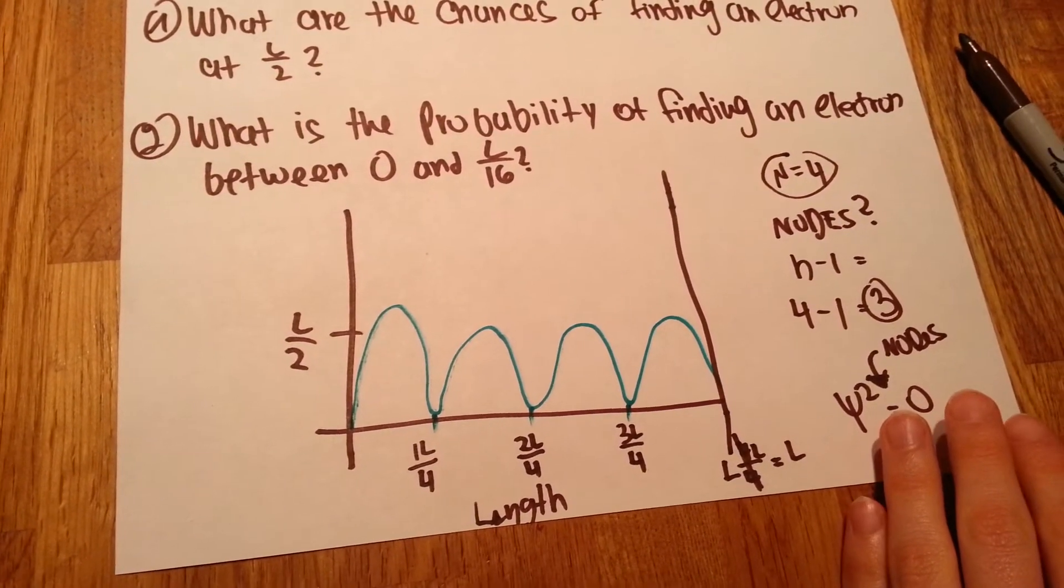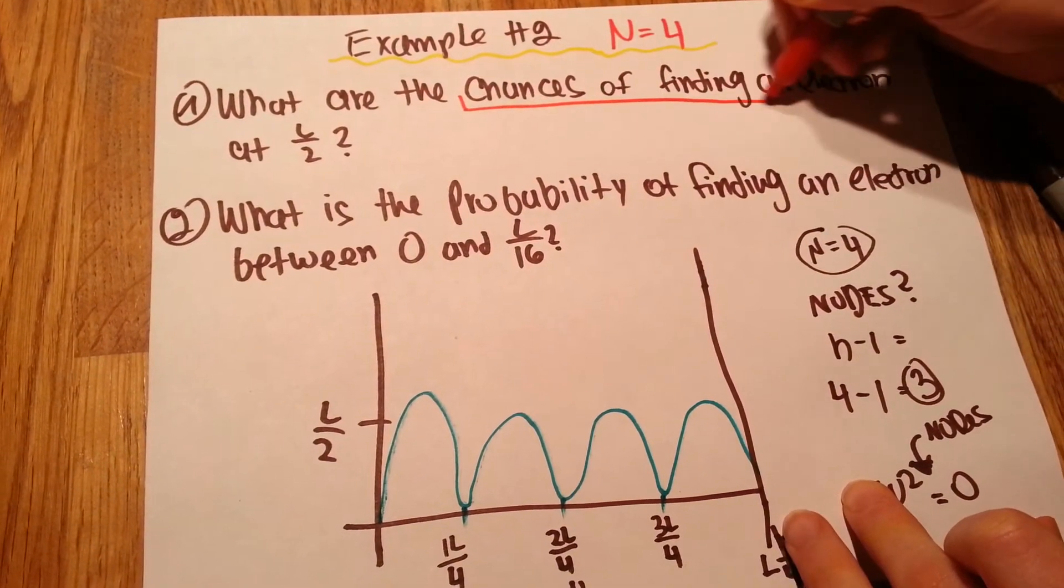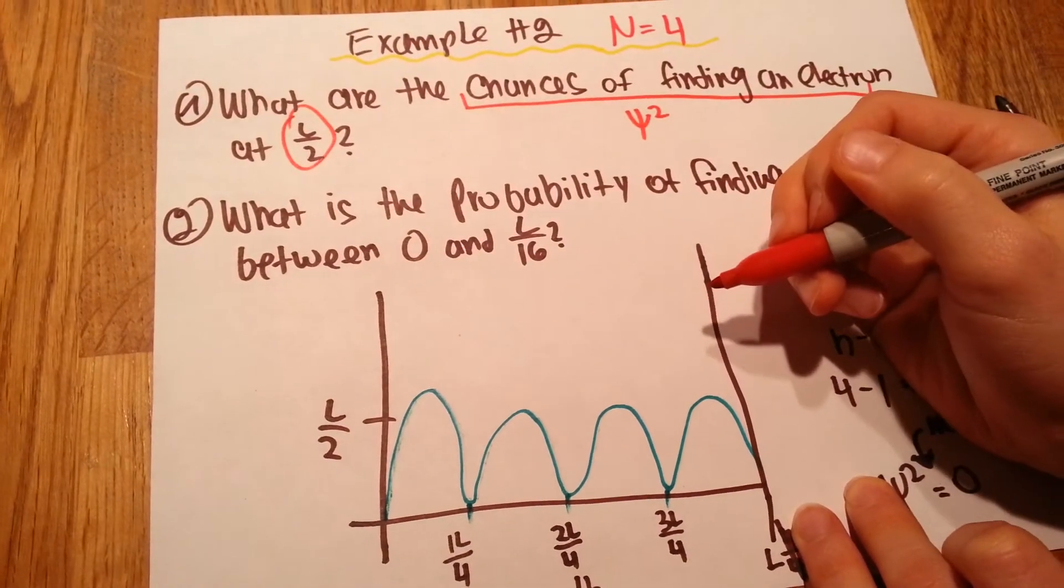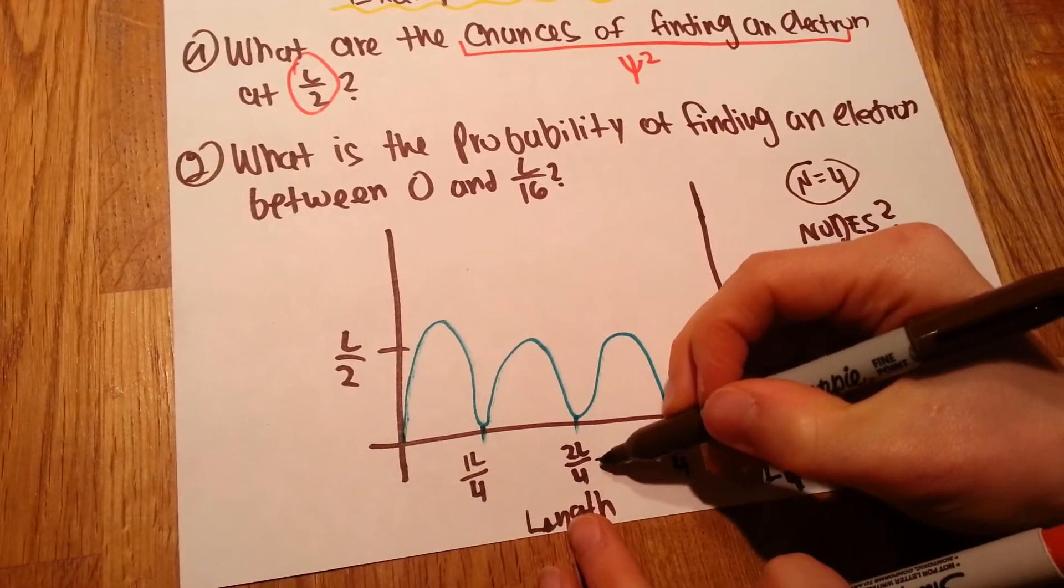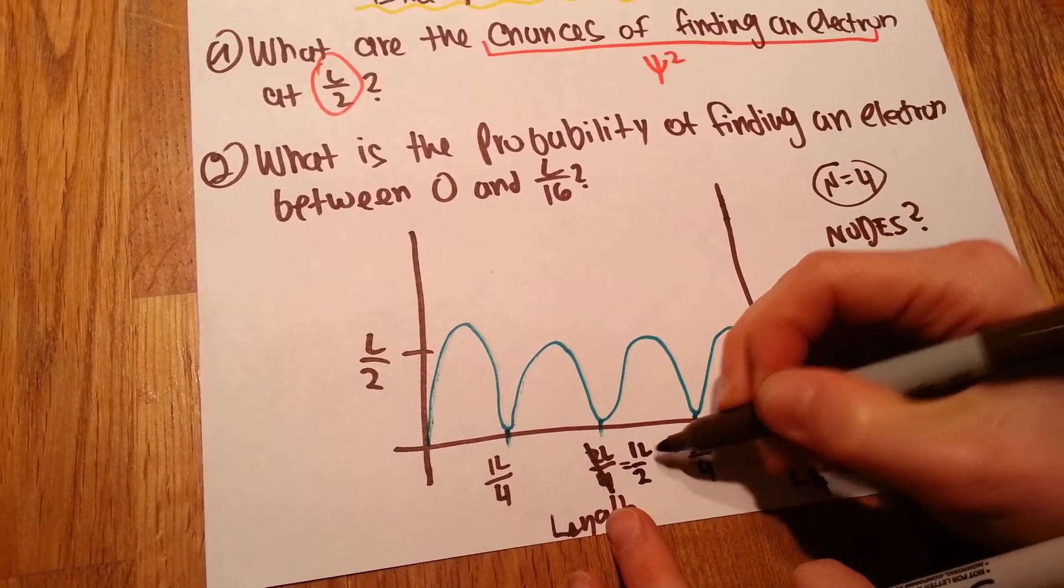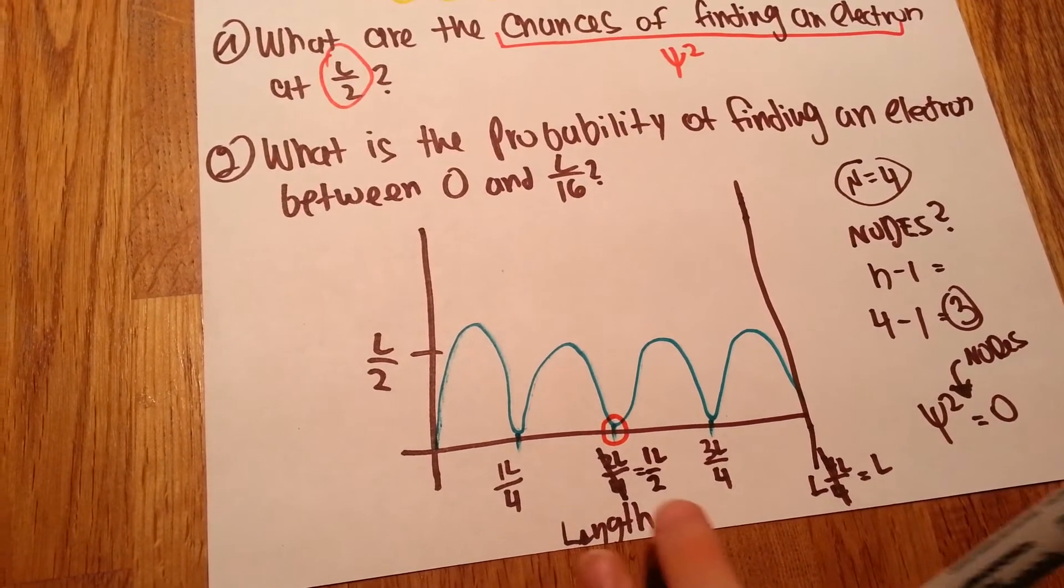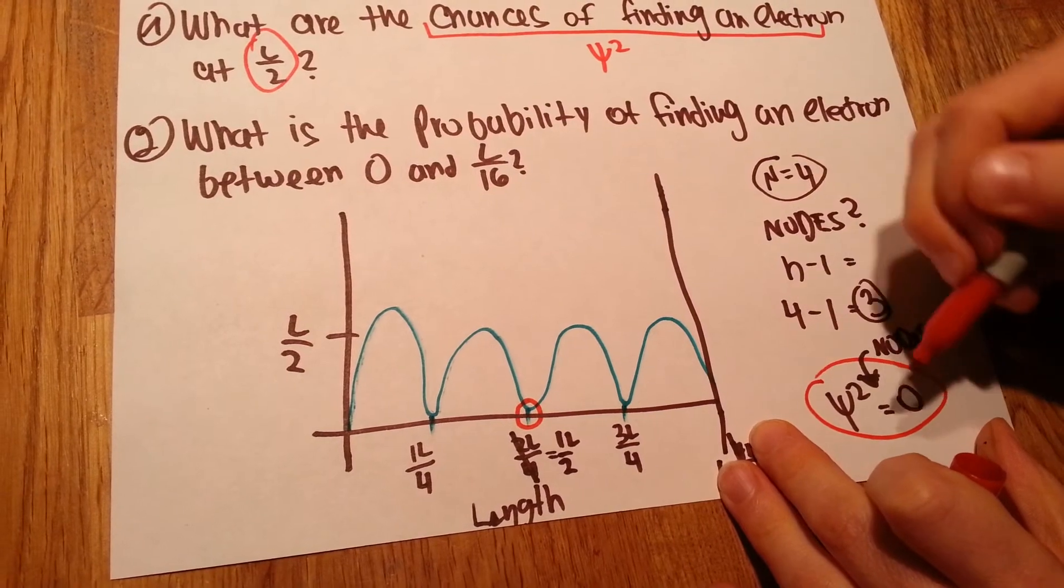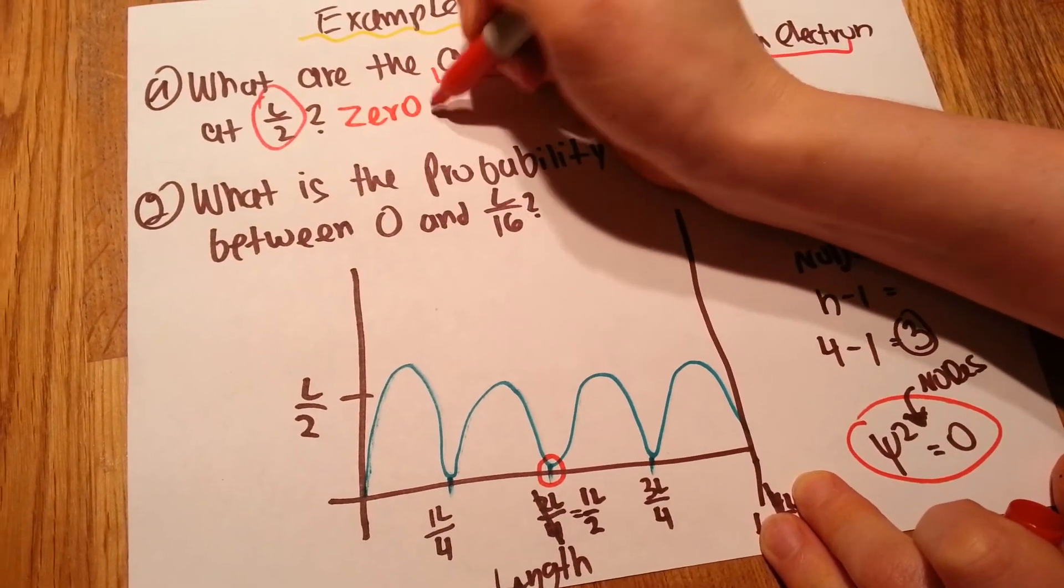Now, going back to the question, we want to figure out what's the psi squared, or chances of finding an electron is the same as psi squared. What is the psi squared at L over 2? Well, although it seems like we don't have L over 2 in the graph, if you do simple math, you see that 2 divided by 4 is half. Therefore, this is going to be half L. So this is our point, which is, surprisingly, is a node. And, like we said before, at node, our psi squared, our probability to find an electron is 0. So the answer for this question is 0.